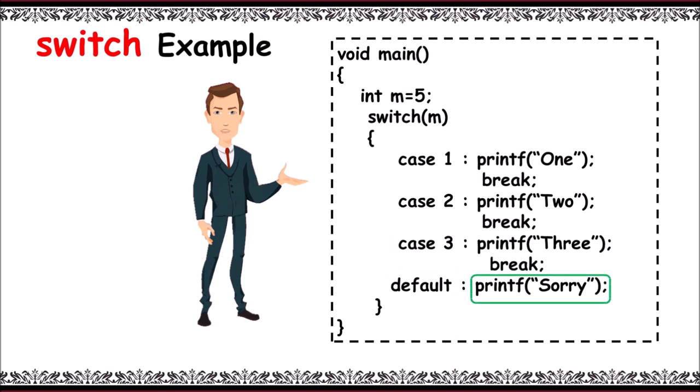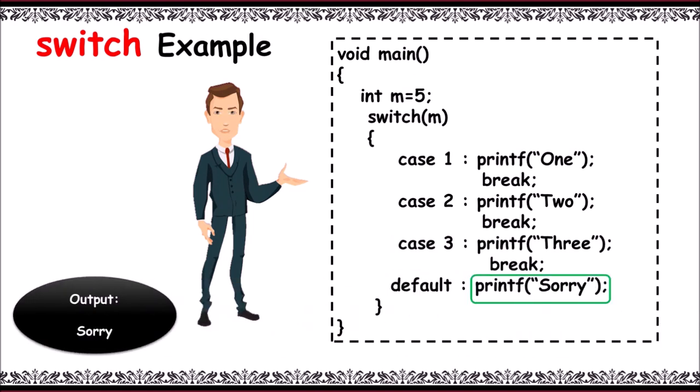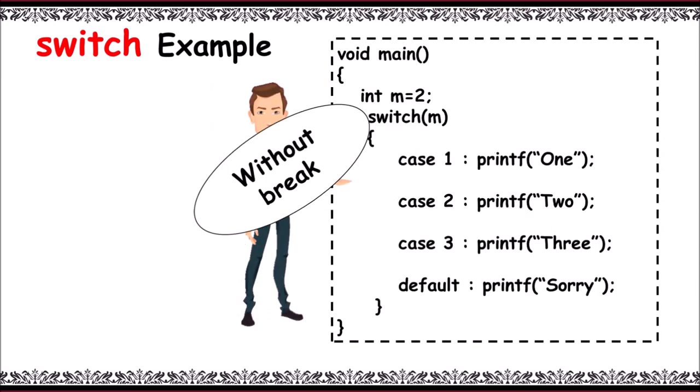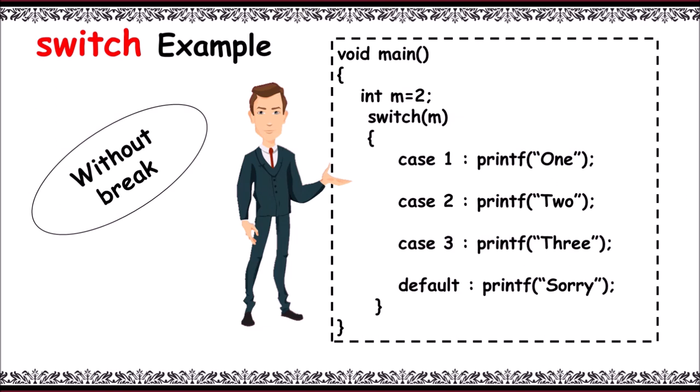Now let's take another example without break. Let's take m equals 2 again. Switch of m checks for 2 from the beginning. Case 1, not matched. Next, case 2 is matched and prints 'two'.